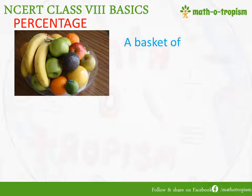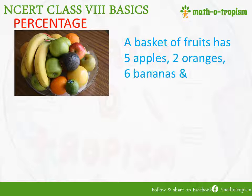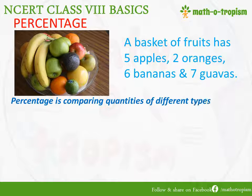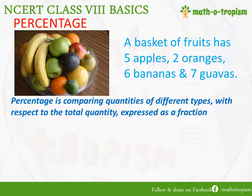Next we will see about percentage. Let us take the same basket of fruits which has 5 apples, 2 oranges, 6 bananas, and 7 guavas. Percentage is comparing quantities of different types with respect to the total quantity, expressed as a fraction of 100. In ratio we compare two quantities directly, but in percentage we compare them with respect to the total quantity. The major difference between ratio and percentage is that the total quantity comes into picture when we are taking percentages.